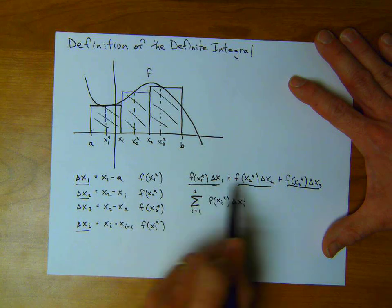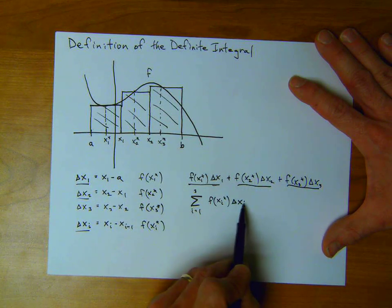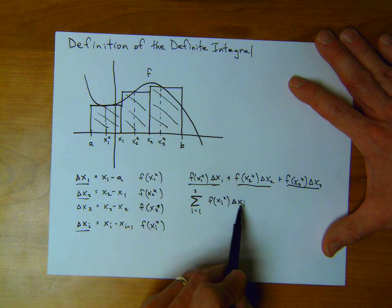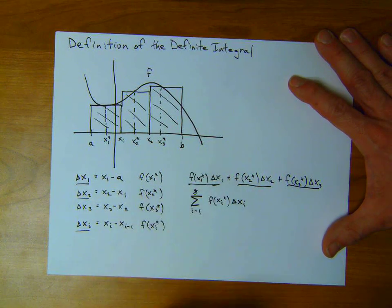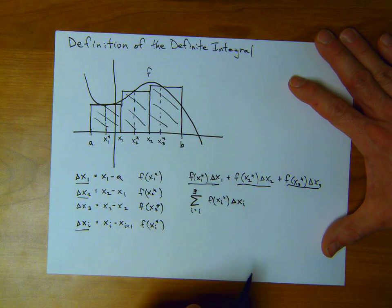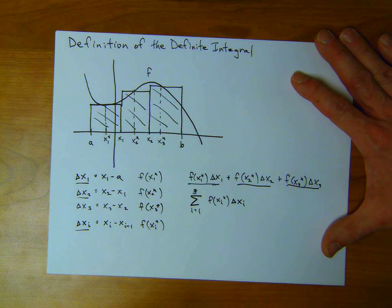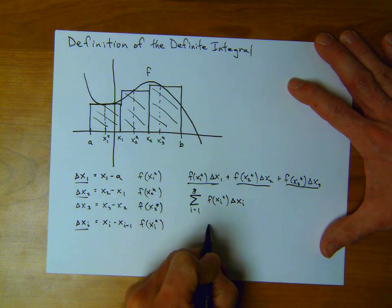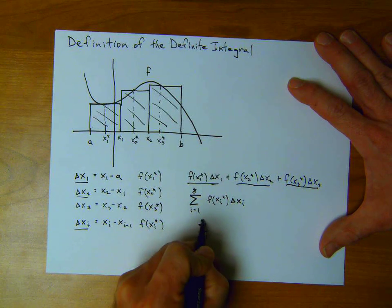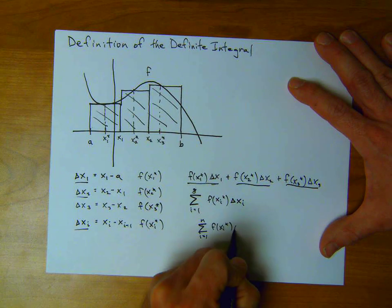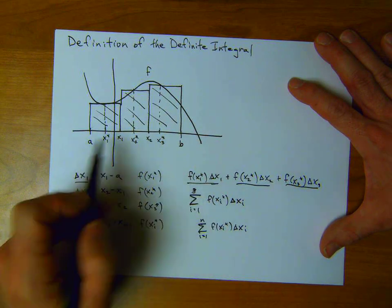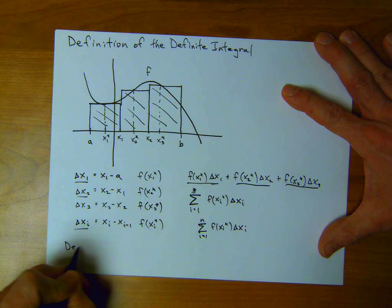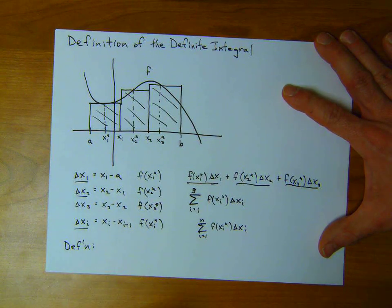For a more general form with n rectangles, we would have the sum from i equals 1 to n of f(x_i star) times delta x_i. We can let n be any number — I just used 3 here because it's tedious enough, but you get the idea. We can use as many rectangles as we want. So this leads us to the definition of the definite integral.